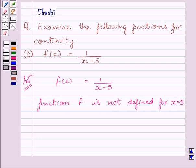But we know x minus 5 is a polynomial function and polynomial functions are continuous at every real number.